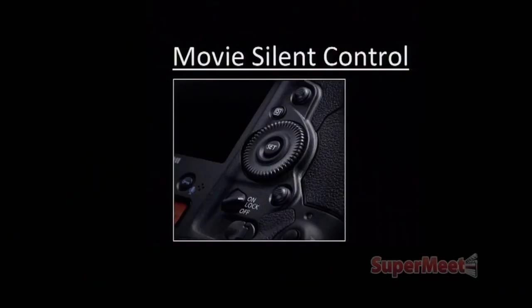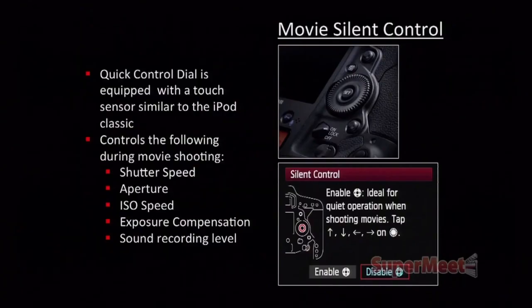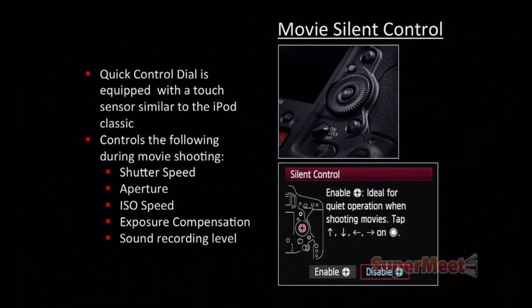Remember the original iPod? That little dial on the top right — it's basically a silent movie control, so you're not hearing clicking or picking up sounds when you're using it. You can control the following things during shooting: shutter speed, aperture, ISO speed, exposure compensation, and sound recording level. Very cool stuff and really a nice addition. Hopefully that will make it into other camera systems in the future.